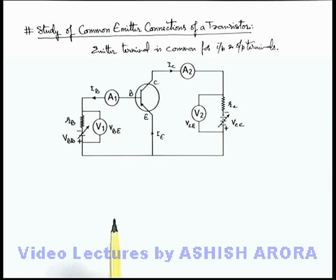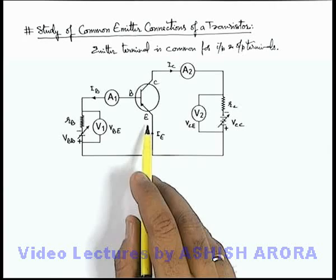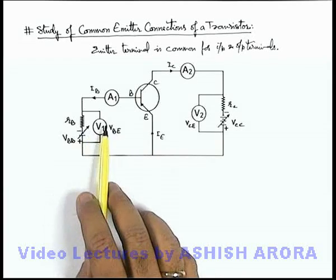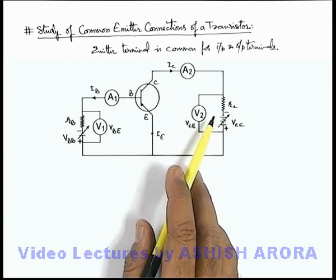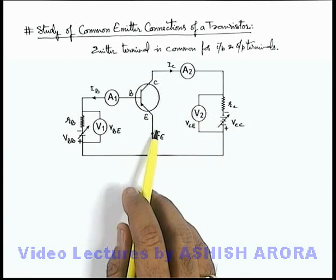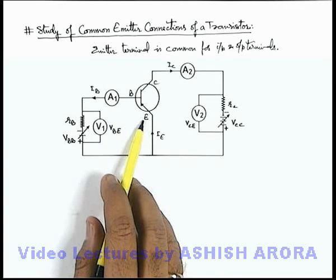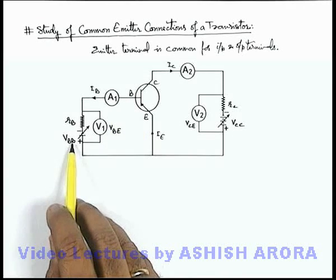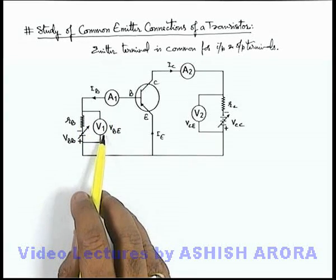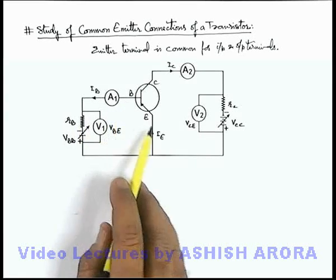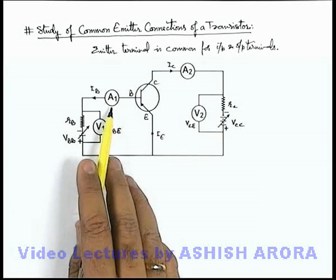This circuit shows the common emitter connection of a PNP transistor. Here, for the input side, we consider the terminals base and emitter, and for the output side we consider the terminals collector and emitter. To keep the base-emitter junction forward biased, we put a battery VBB, and to measure base current and input voltage — that is, voltage across base and emitter — we put a voltmeter V1 and ammeter A1.